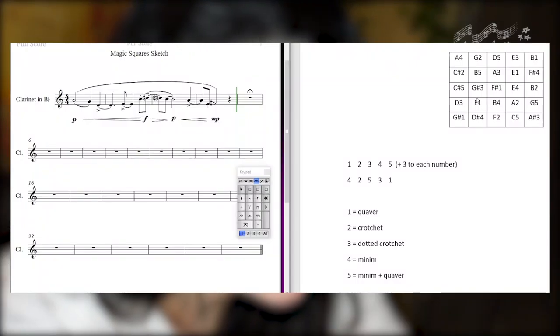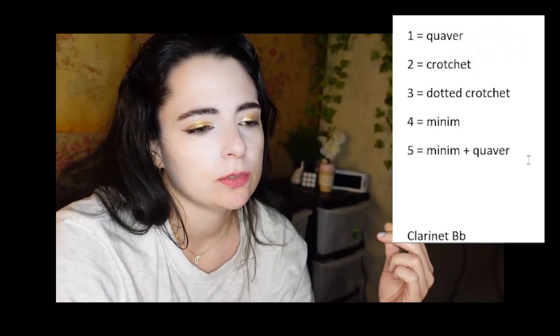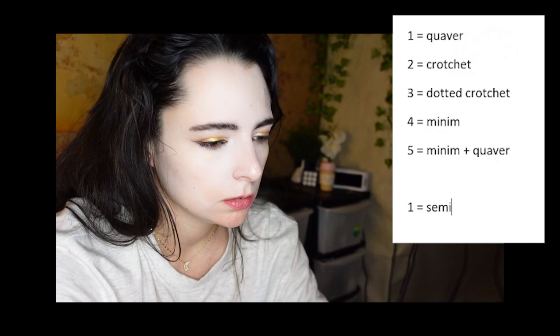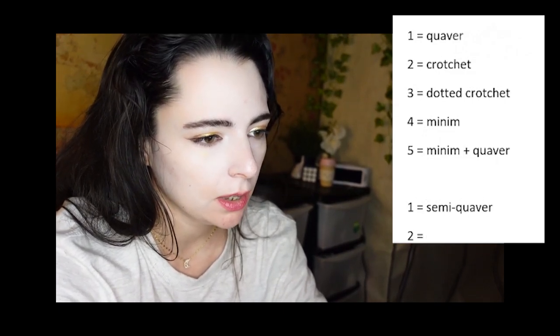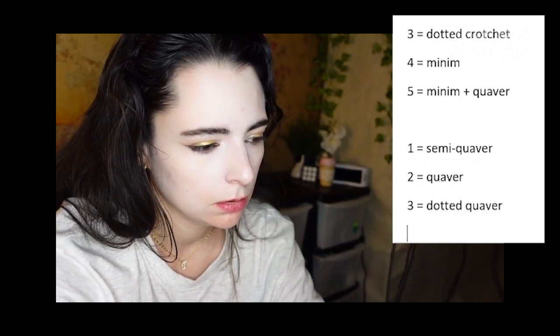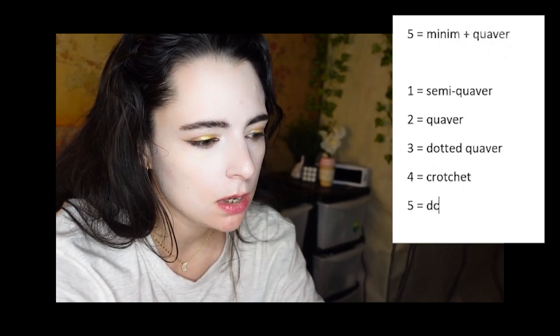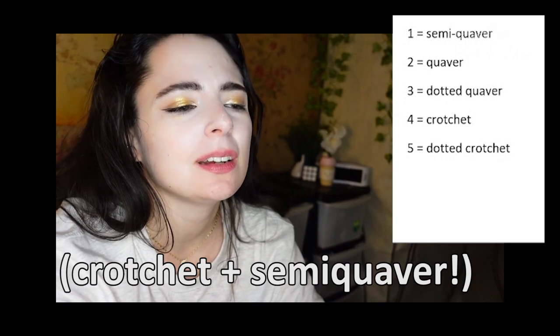I don't want to just keep doing the lines because there are so many long notes. I think I want to go diagonally down on these one-notes. We have B and it's on a quaver. Now if one became a semi-quaver, two would have to be a quaver, three would be a dotted quaver, four a crotchet, five a dotted crotchet. So in this next section, one equals a semi-quaver, and I can change all that to semi-quavers.